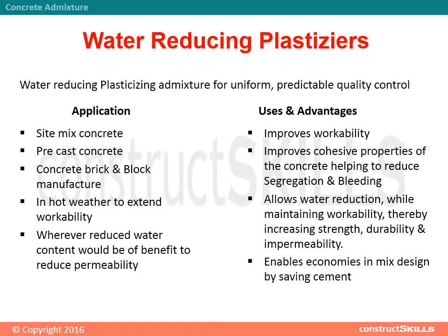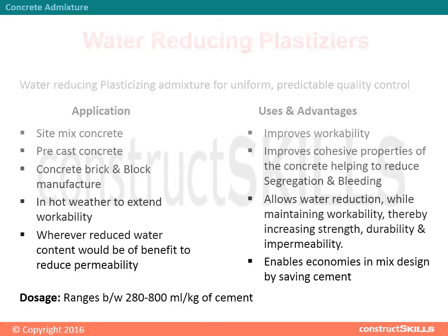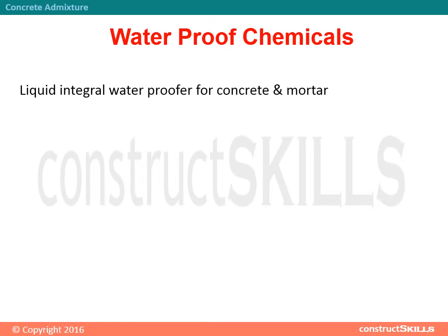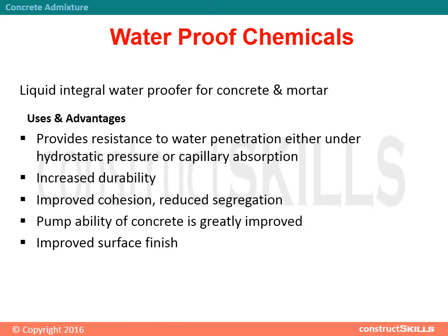Water reducing plasticizers enable economies in mix design by saving cement. Dosage ranges between 280 to 800 milliliters per kilogram of cement. Waterproof chemicals are liquid integral waterproofers for concrete and mortar. Their advantages include resistance to water penetration under hydrostatic pressure or capillary absorption, increased durability, improved cohesion, reduced segregation, greatly improved pumpability, and improved surface finish. Dosage is 150 to 250 milliliters per kilogram of cement.